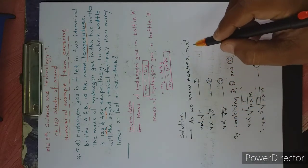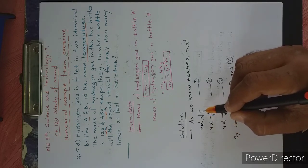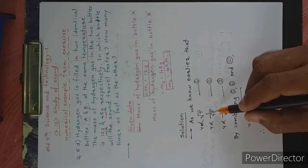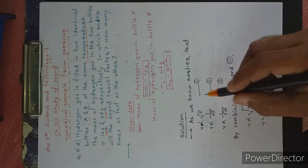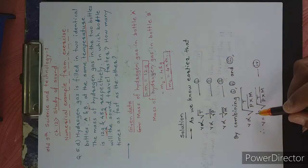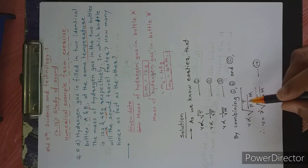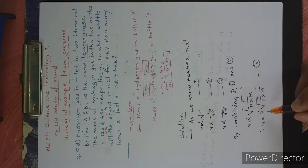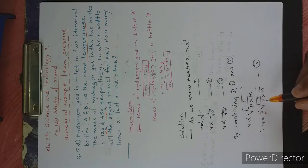Now, as we know that V is directly proportional to the square root of the temperature of the gas, V is inversely proportional to the square root of the pressure, and V is inversely proportional to the square root of the mass of the gas. By taking these points into consideration, we can combine them and form the formula: V is proportional to the square root of temperature divided by pressure times mass. Therefore, we can take a constant of proportionality gamma, giving us V equals gamma times the square root of temperature divided by pressure times mass.